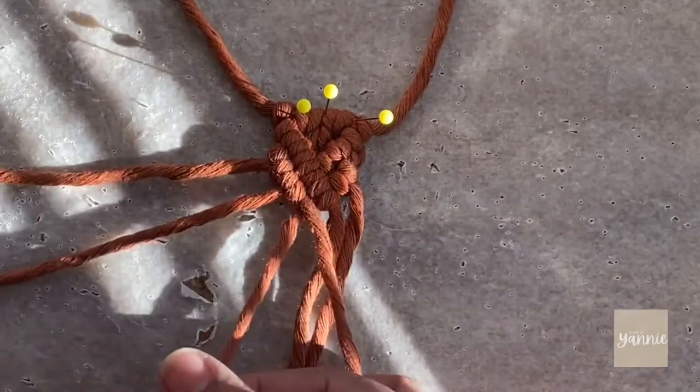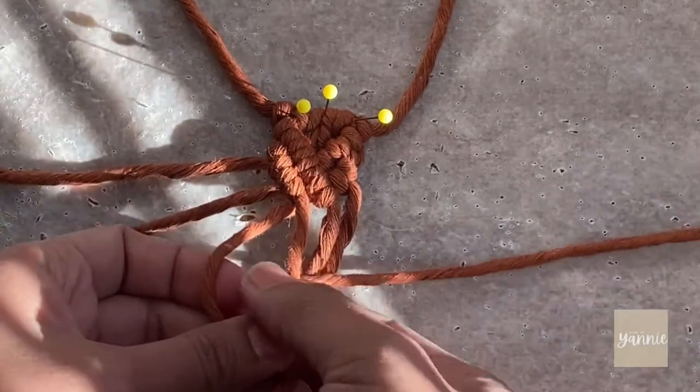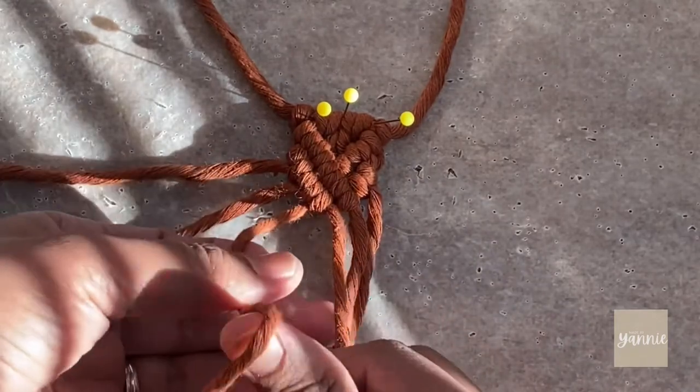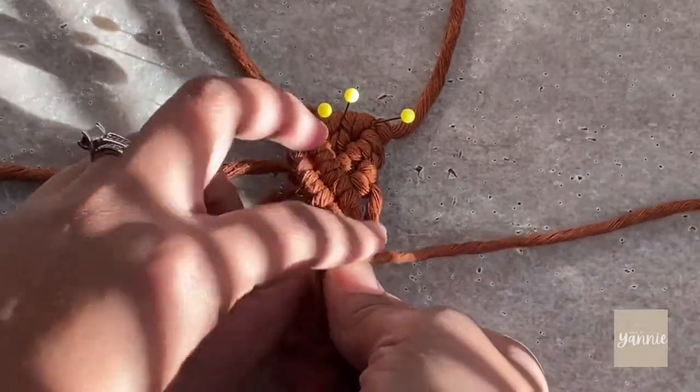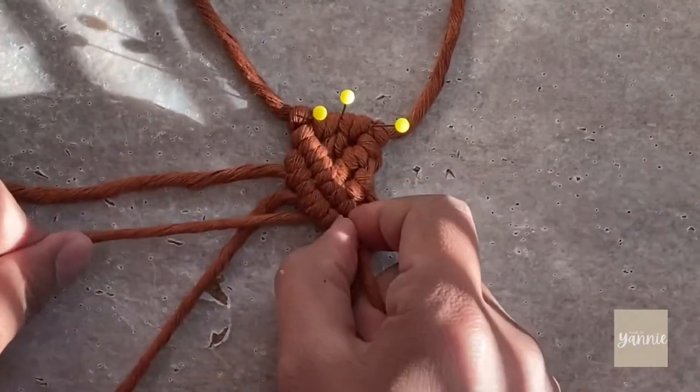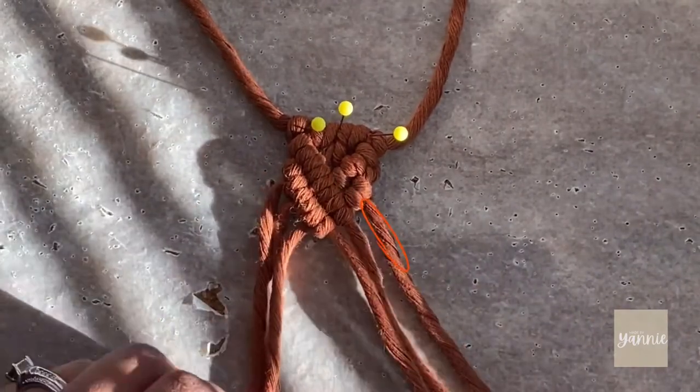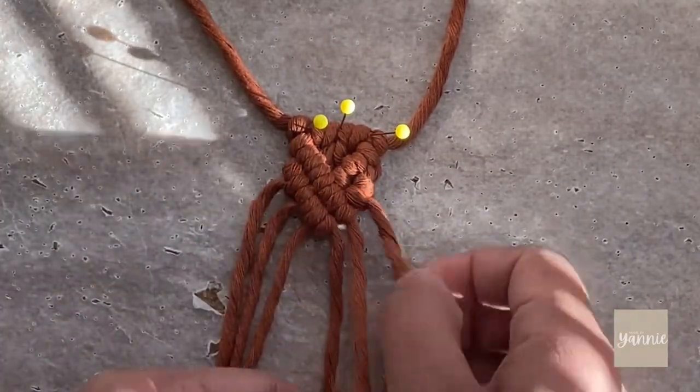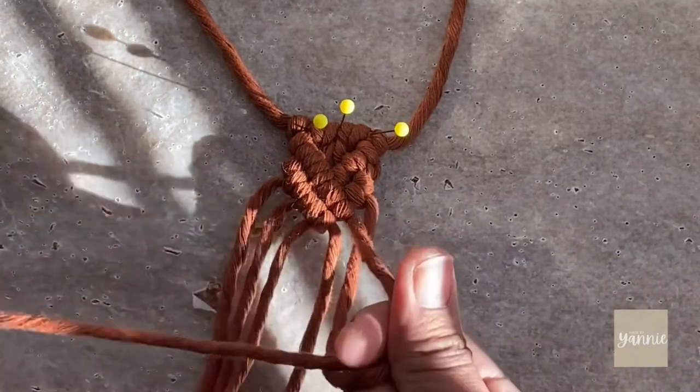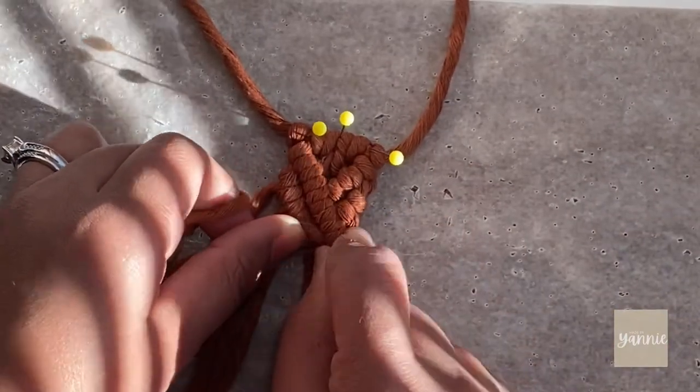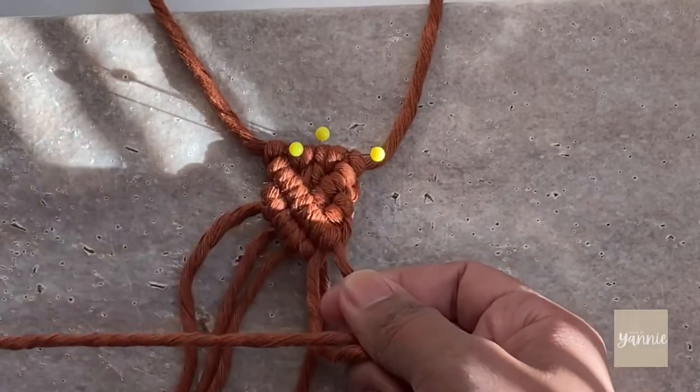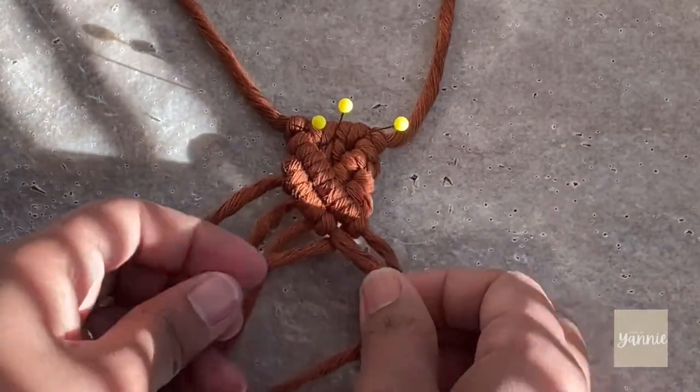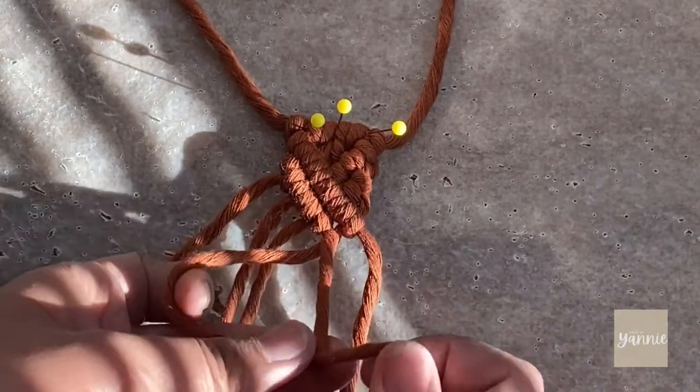As you can see, it's looking almost like an X now, which is the pattern that we are going for. Now if you remember that last piece of working cord I missed, grab that and bring it under the support cord and create a double half-hitch knot like so. Now bring that working cord under that support cord and create another double half-hitch knots.